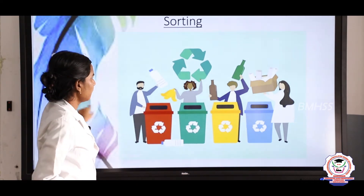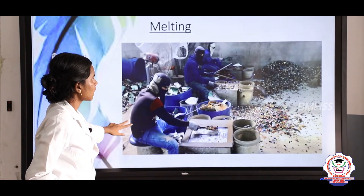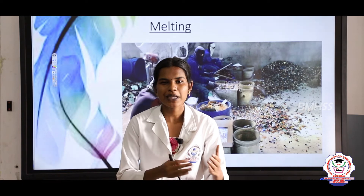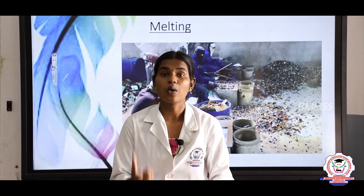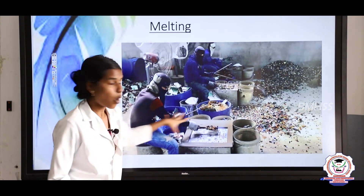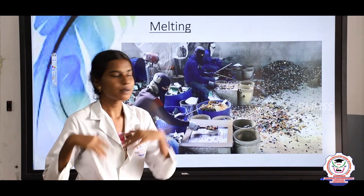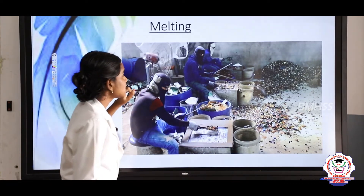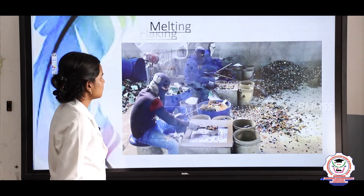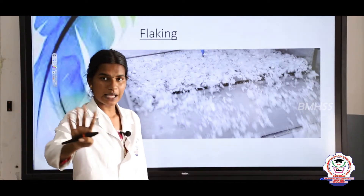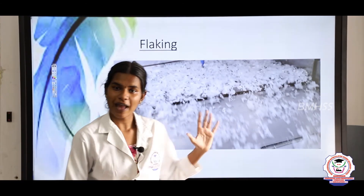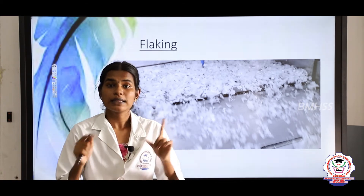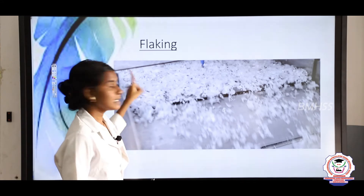The third process is melting. What is meant by melting? Making something into liquid we call melting. They melt all the plastic products, then wash and dry them. The fourth step is flaking — they make all the pieces into thin flakes. This is the fourth step, called flaking.